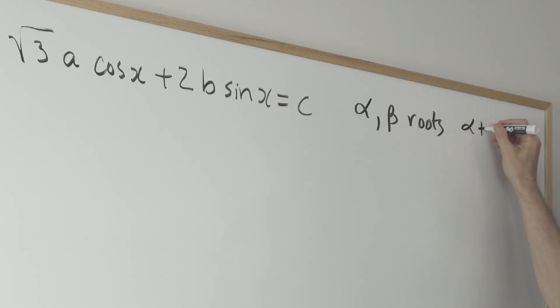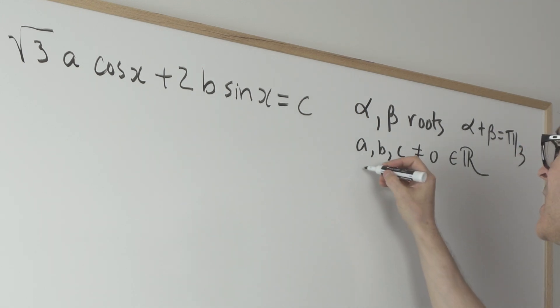So α + β = π/3. And we also know that A, B, C are non-zero and real. And so the objective here is to figure out what the ratio is of B over A. So there's the problem.